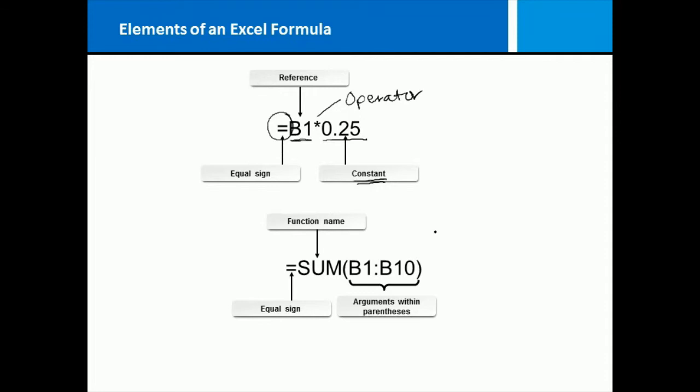Alternatively, you have what are called functions. Instead of you writing out all of the individual references, you can use functions and there are hundreds of them in Excel. In this case, again, you start with the equal sign but the function name always comes next. And then inside of parentheses, following the function name, you put whatever the required arguments are for that particular function and they vary. So in the case of the sum function, it wants to know what cells do you want me to sum? In this case, B1 through B10. Colon means through.